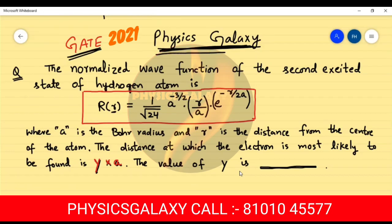Hello and welcome to Physics Galaxy. Today we will discuss a problem that appeared in the GATE examination. The problem states: the normalized wave function of the second excited state of hydrogen atom as a function of radial distance is R = (1/√24) × a^(-3/2) × (r/a) × e^(-r/2a). This is our radial wave function, where a is the Bohr radius and r is the distance from the center of the atom. We need to find the distance at which the electron is most likely to be found, expressed as y × a, and find the value of y.